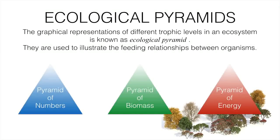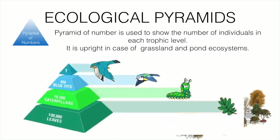Ecological pyramids are graphical representations of different trophic levels in an ecosystem. As you go to a higher level of the food chain, the values decrease, forming the shape of a pyramid. There are three types of ecological pyramids: pyramid of numbers, pyramid of biomass, and pyramid of energy.